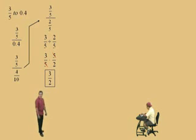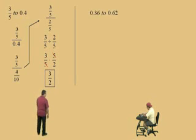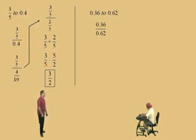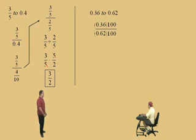There you go. Don't forget to box your answer. All right. Let's do another one. Here, we have the ratio of 0.36 to 0.62. Remember, that's 36 hundredths to 62 hundredths. So, we're going to clear our decimals by multiplying top and bottom by 100, which is basically the LCD, because 0.36 is 36 over 100, right? And 0.62 is 62 over 100.